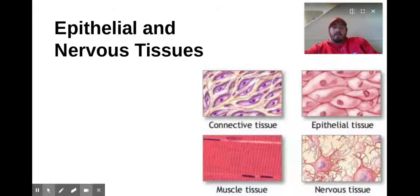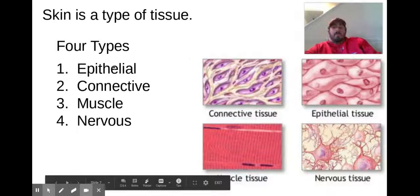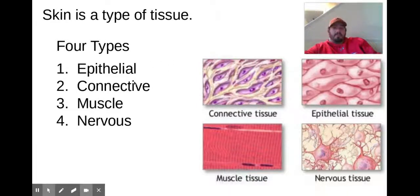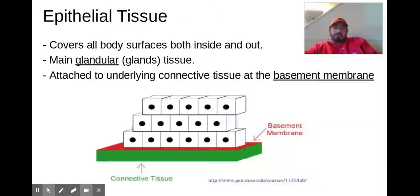Today we're going to be going over these two types of tissues. Just a reminder, your four types are epithelial, connective, muscle, and nervous. Epithelial and connective have a lot that go with them — a lot of different parts and components. So we're going to do those in two separate videos. In this video, we'll be talking about epithelial and nervous, mostly epithelial tissue though.